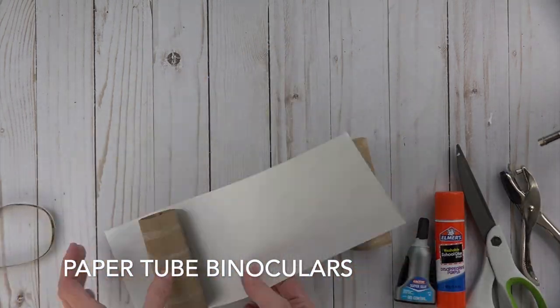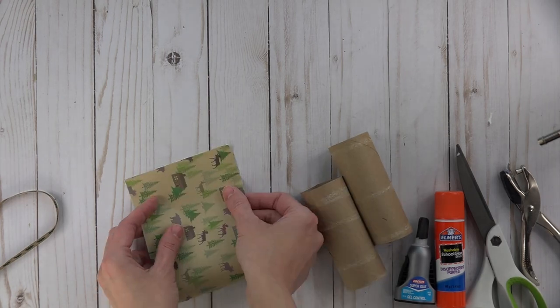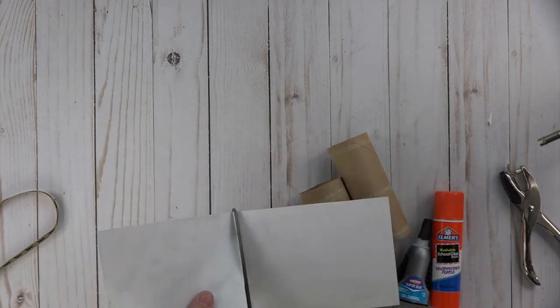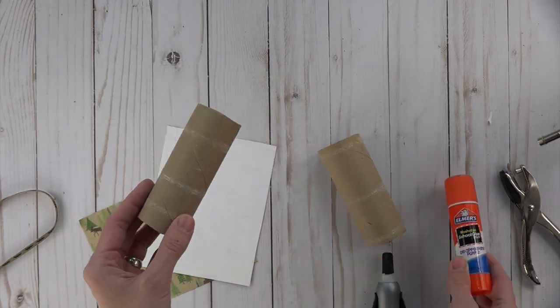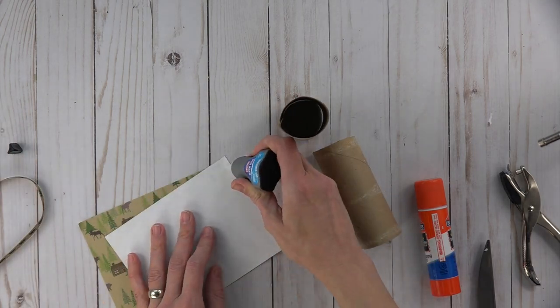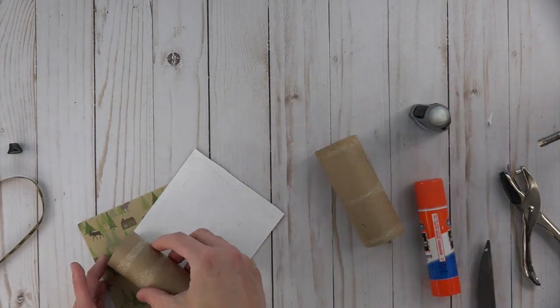First on our list is the good old paper tube binoculars. I used a paper towel roll, cut it in half, got some cute scrapbooking paper, cut it to fit, and then make sure your kids glue with the Elmer's glue and not the super glue that I used.